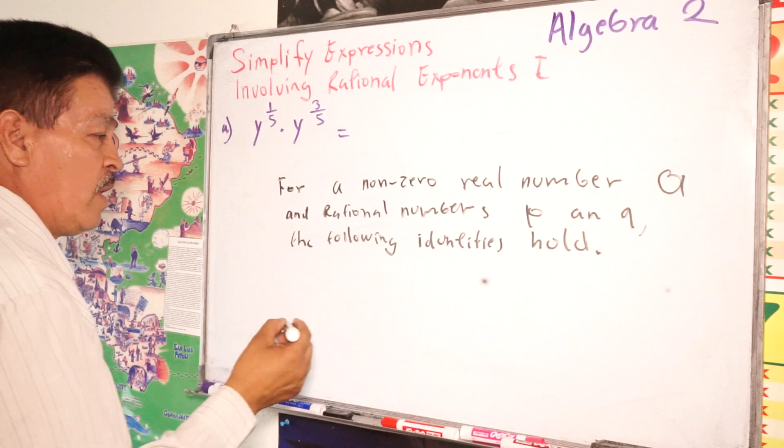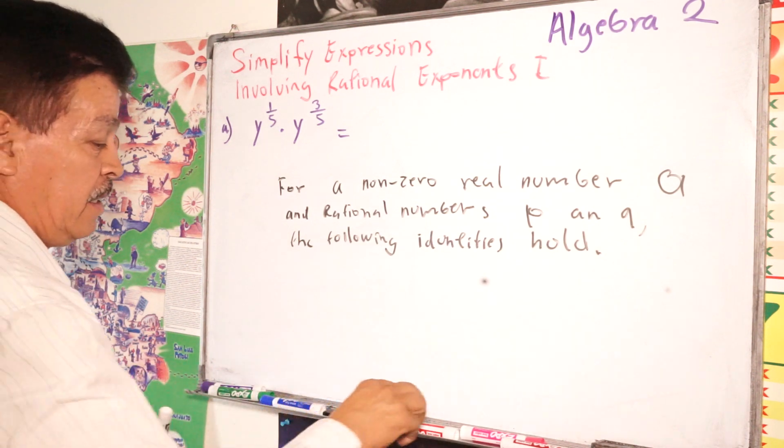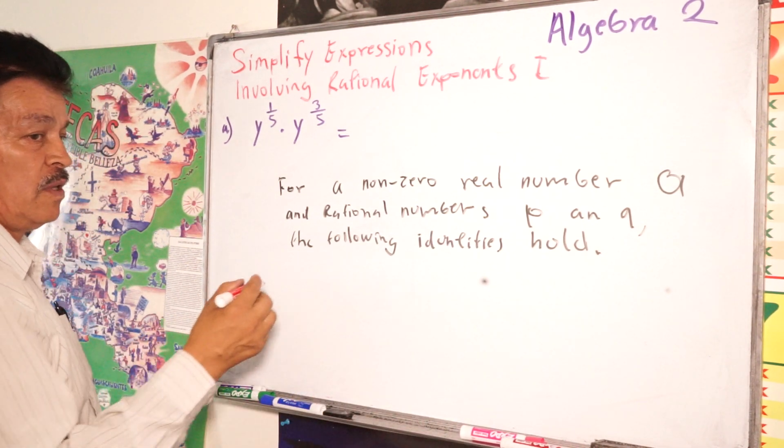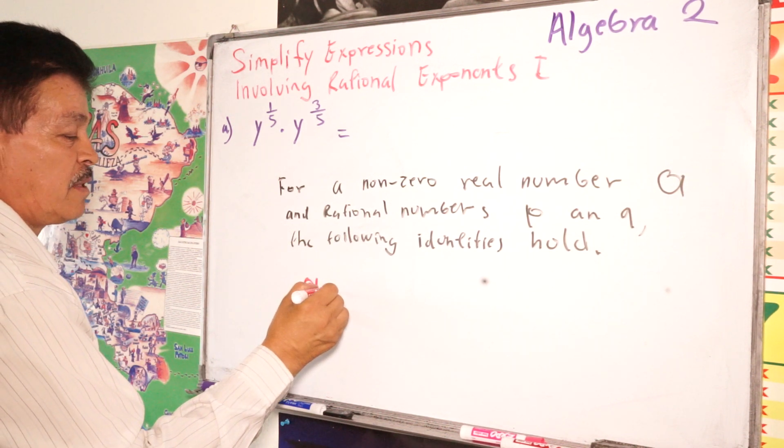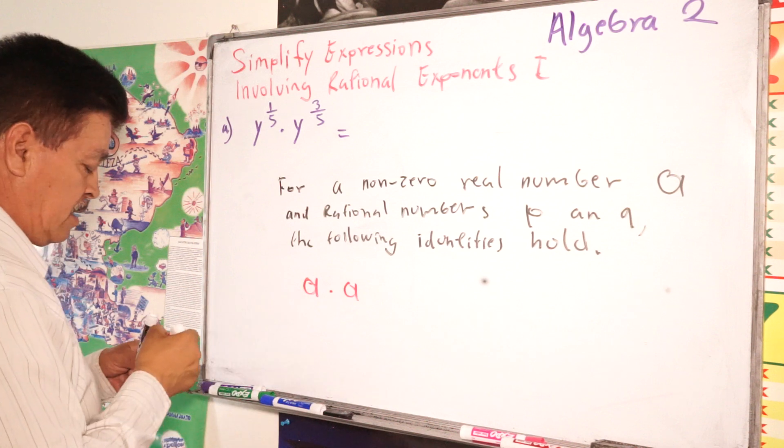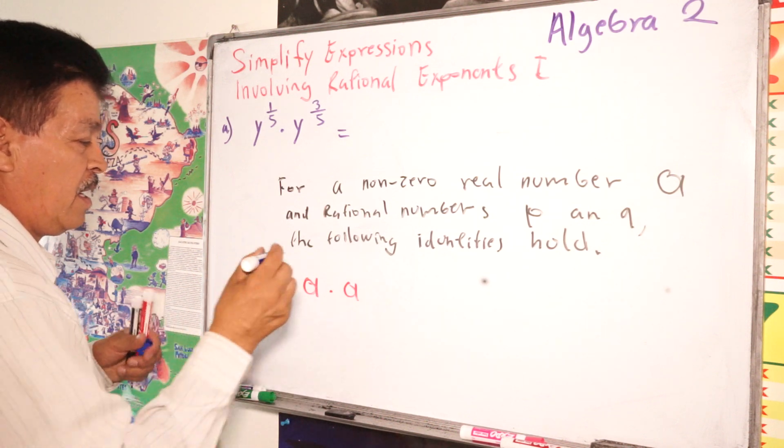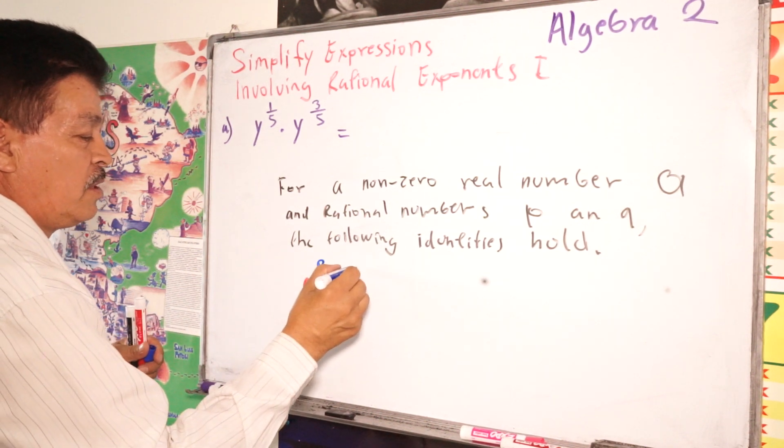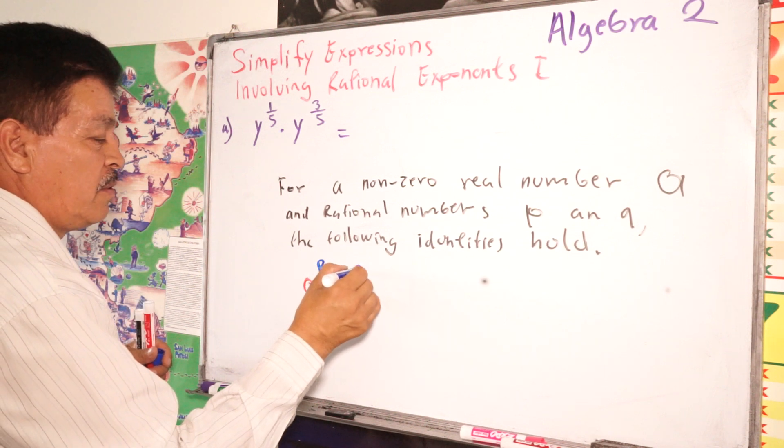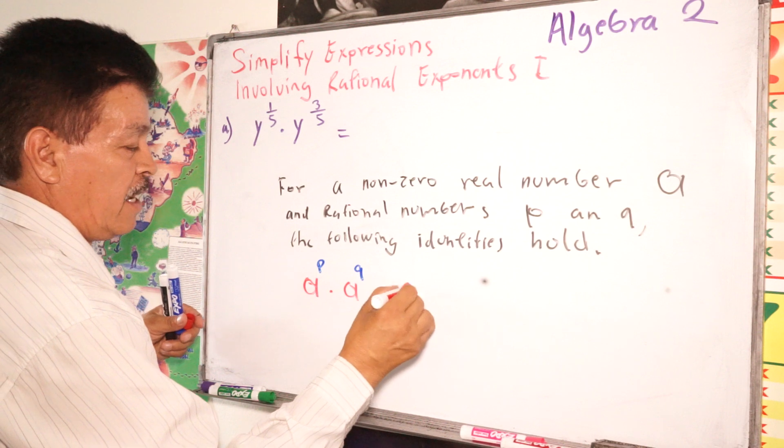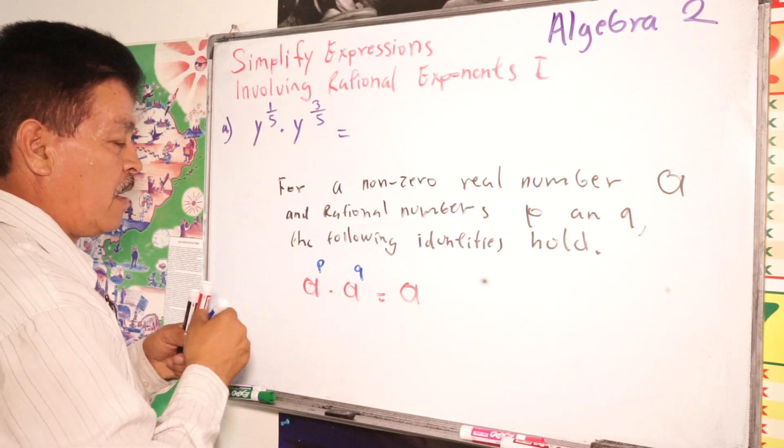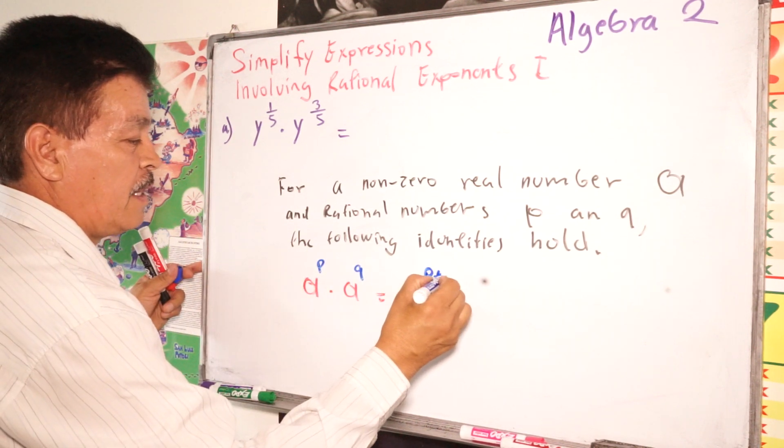Alright, the first one we have here, this kind of rule. And the first one is we have A times A, but A to the P power times A to the Q power. This equals A to the P plus Q.